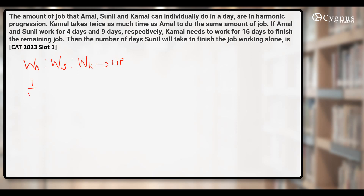The reciprocals of these works — 1/WA, 1/WS, and 1/WK — must be in AP. And the reciprocal of work done gives the time taken. So the time taken by Amal, time taken by Sunil, and time taken by Kamal would be in AP.